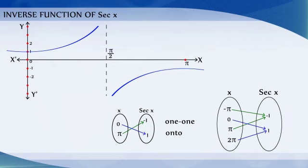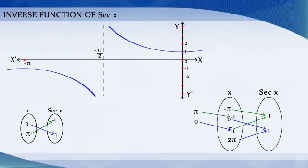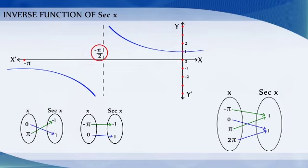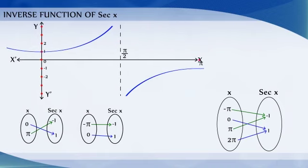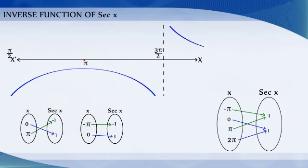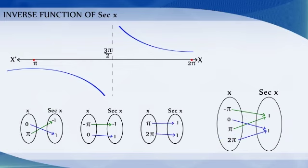Actually, the Secant function restricted to any of the intervals [-pi, 0] minus {-pi/2}, [0, pi] minus {pi/2}, [pi, 2pi] minus {3pi/2}, etc., is bijective and its range is R minus (-1, 1).